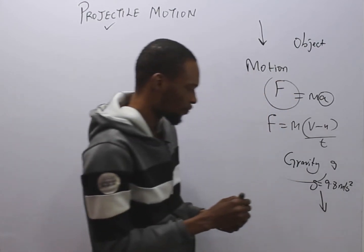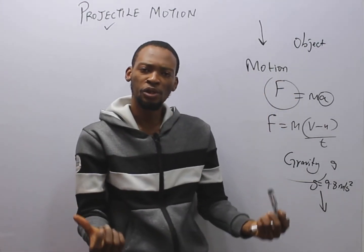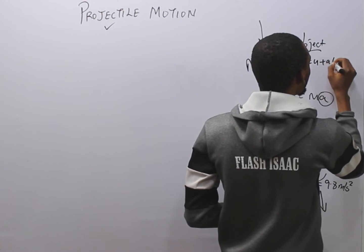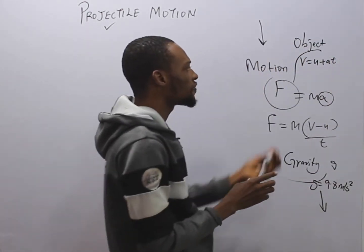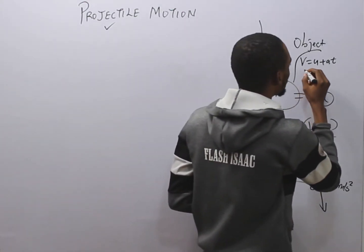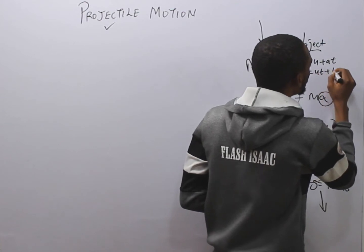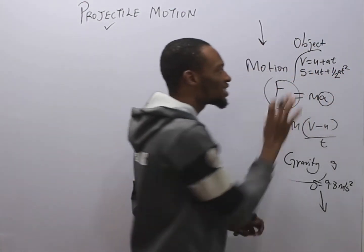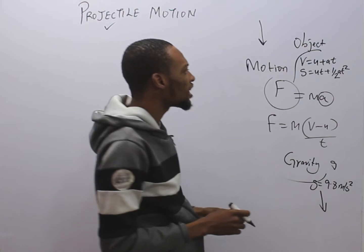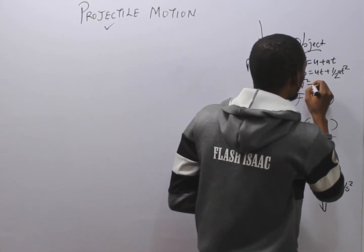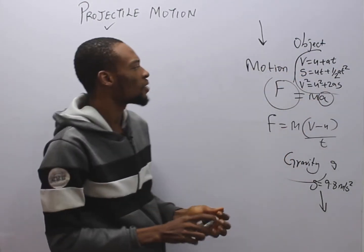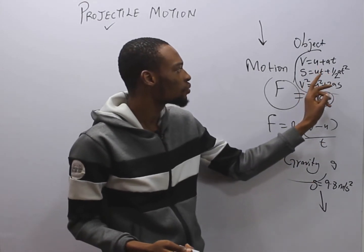Now that we know what projectile is, gravity acts downward. From Newton's first law, we get that v = u + at, where v is final velocity and u is initial velocity. We also get that s = ut + ½at². And we get that v² = u² + 2as. These three equations are our equations of interest.